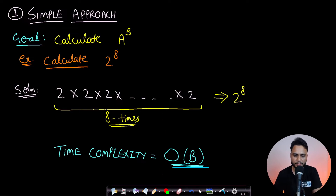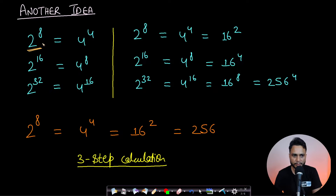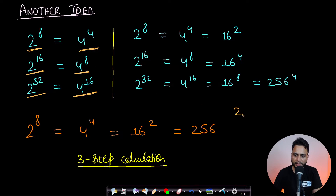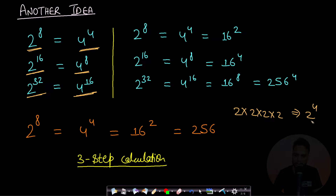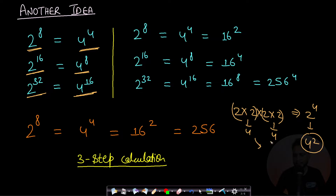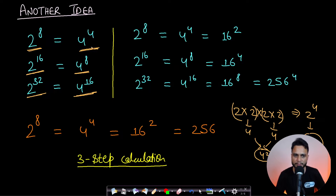There exists a better idea. If you look at 2 to the power 8, it can also be written as 4 to the power 4. Similarly, 2 to the power 16 is 4 to the power 8, and 2 to the power 32 is 4 to the power 16. What's happening here: if you club pairs of twos together, each pair becomes a 4, so 2 to the power 4 becomes 4 to the power 2. That means 2 to the power 8 can also be written as 4 to the power 4.